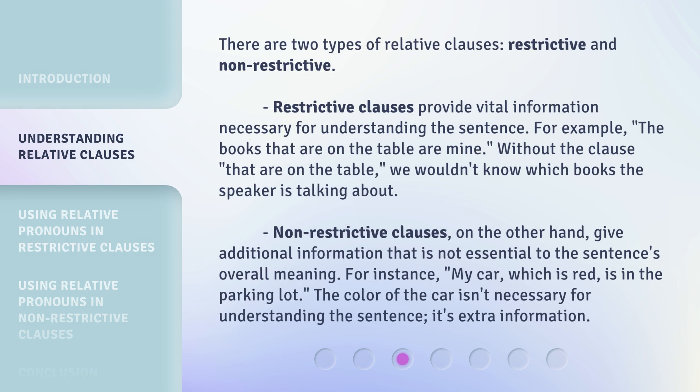There are two types of relative clauses: restrictive and non-restrictive. Restrictive clauses provide vital information necessary for understanding the sentence. For example, 'the books that are on the table are mine.' Without the clause 'that are on the table,' we wouldn't know which books the speaker is talking about.